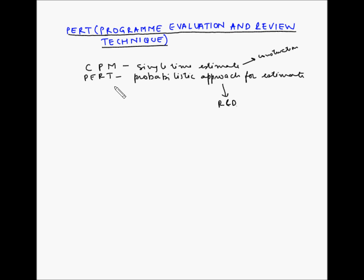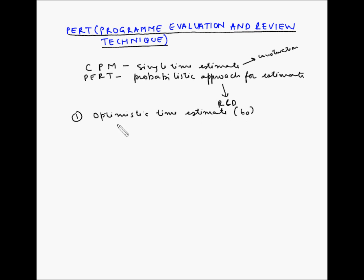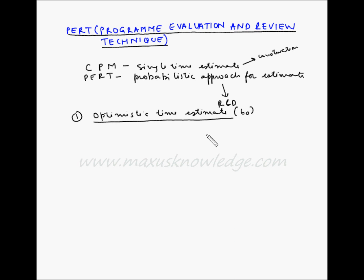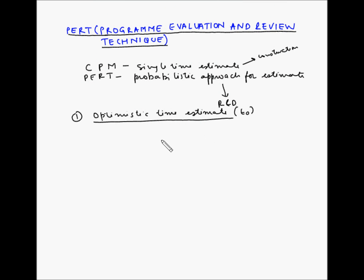The PERT system is based on three time estimates. The first one is the optimistic time estimate, also denoted as TO. This is the shortest possible time estimate of an activity. It is based on the premise that everything will go right for the earliest completion of the activity — in other words, it considers the best case scenario.